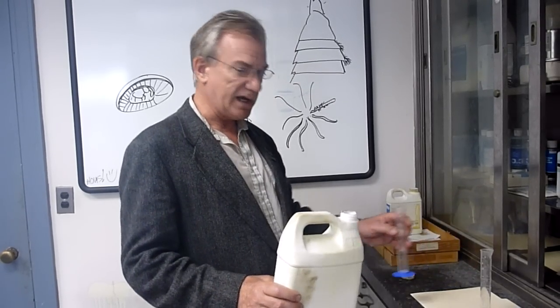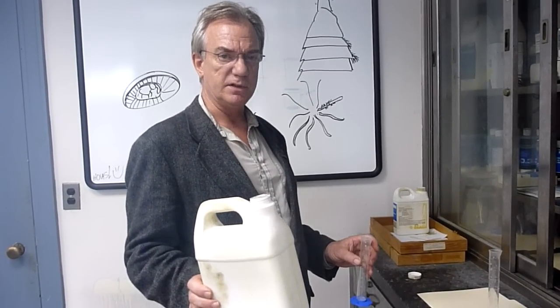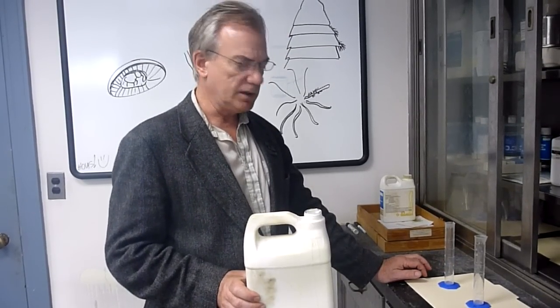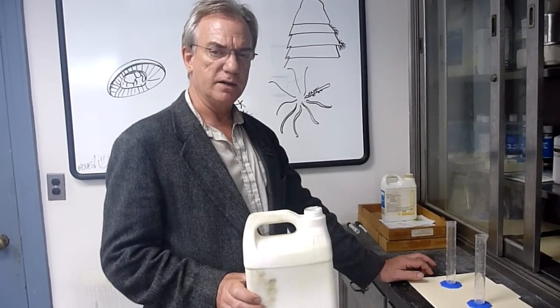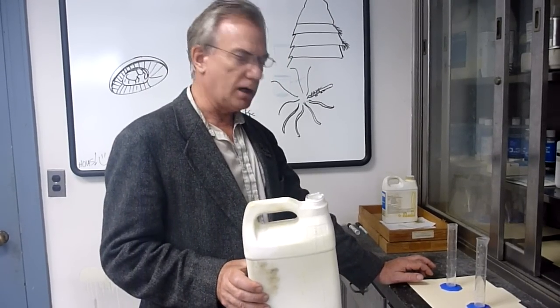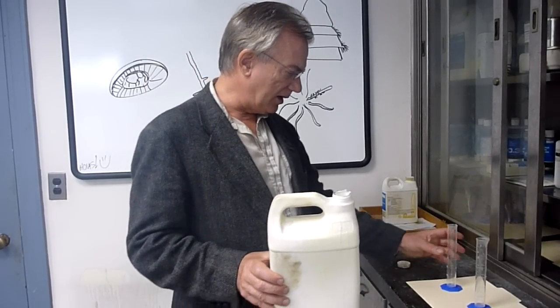The first of which is the actual liquid resin, and the ratio for this resin, in order to mix it properly, is four to one. Four parts of the actual resin to one part hardener. So I'm going to put in...